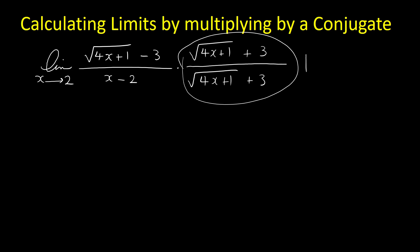By multiplying the top and the bottom at the same time by the conjugate we are not changing anything. We keep the expression and the limit as it was originally, but by multiplying by the conjugate we get rid of the radical.